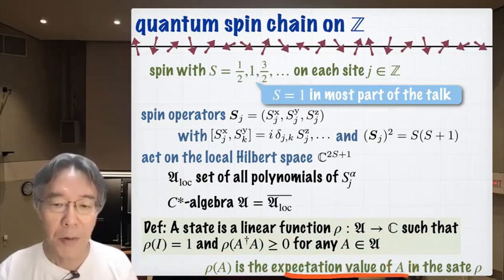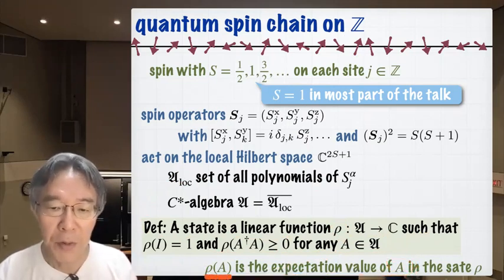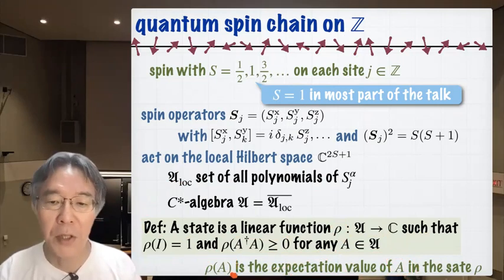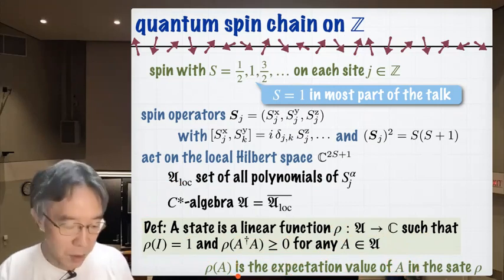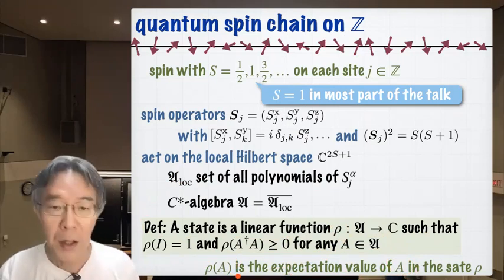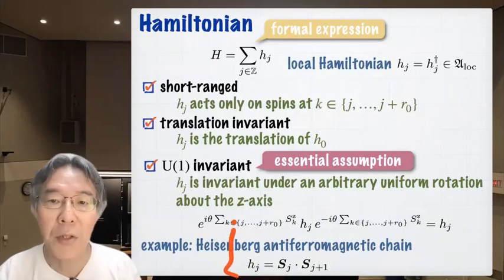In the usual language, rho(A) denotes the expectation value of the operator A in our quantum state. So whenever you see this kind of expression, you always interpret it as a quantum mechanical expectation value.